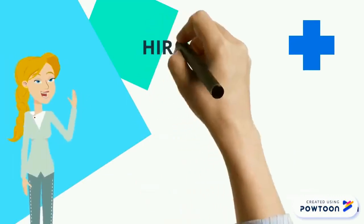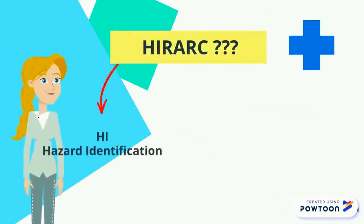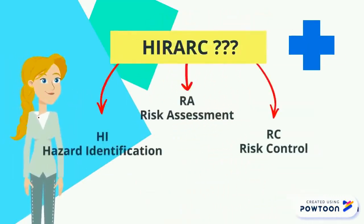What is HIRARC? HIRARC is broken down into 3 elements, which are Hazard Identification, Risk Assessment, and Risk Control.